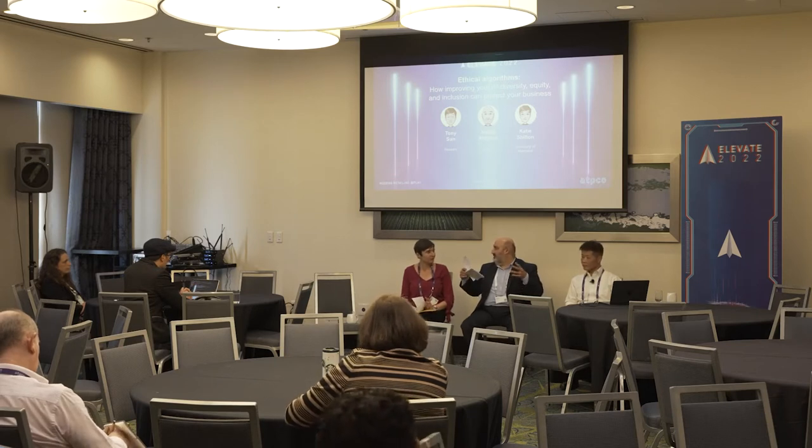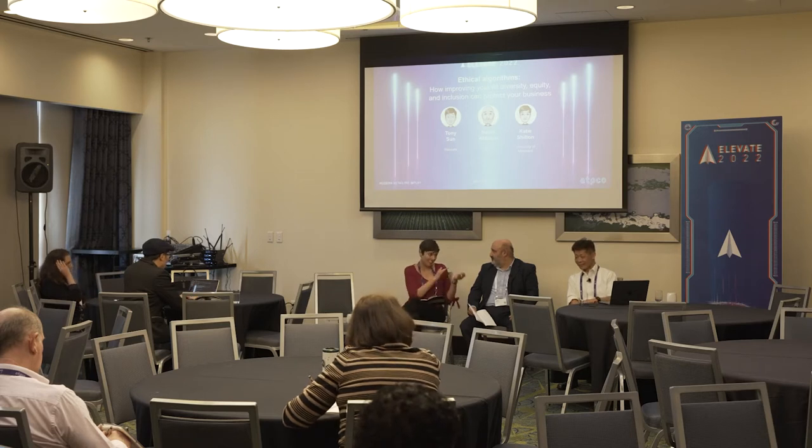Why is this important? What are the consequences if we don't intentionally build ethical algorithms? I'll give you both carrot and the stick. The stick is winding up on the New York Times because you built something that nobody expected, and it turns out it had bias built into it and was unfair to a group of people. Now you're national news. This happens in various industries and sometimes in this industry. That's the first reason to be careful — you don't want your company to be the one who built that.